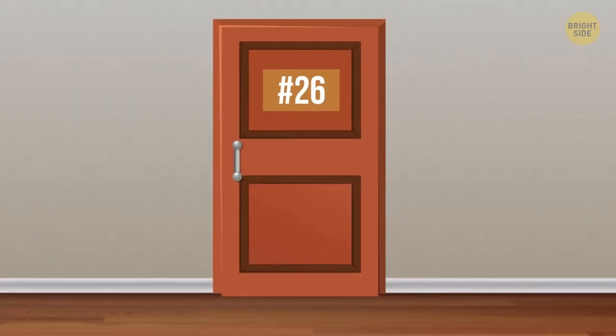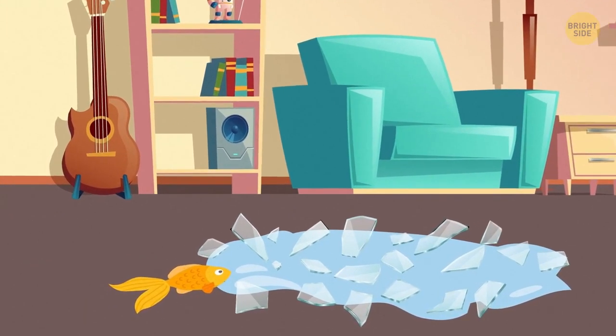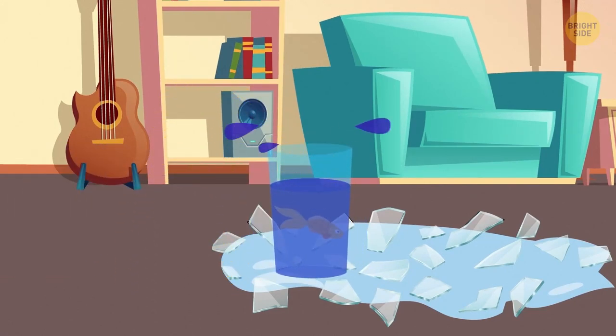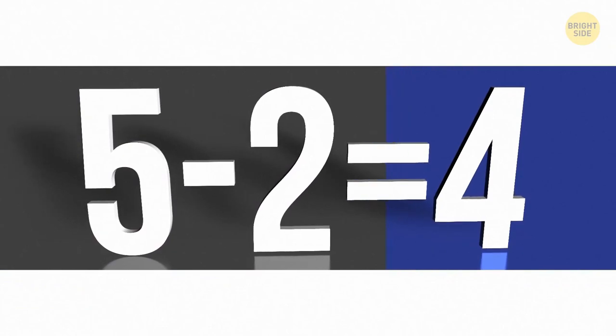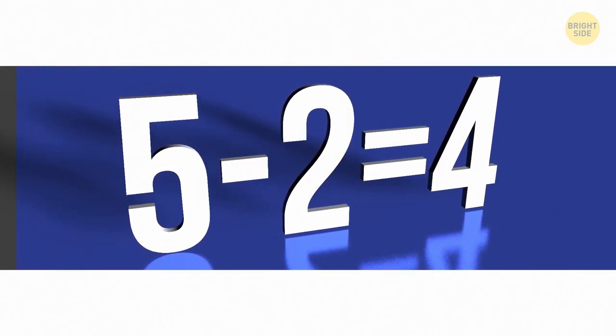26. Someone came into a dark room, bumped into something, some glass broke, and something passed away. What happened? A careless person smashed an aquarium with a goldfish. Hurry, grab a glass of water. 27. How can you take 2 from 5 and leave 4? First, you write F-I-V-E. Then you take away F and E. What's left is IV, which is 4 if you use Roman numerals.